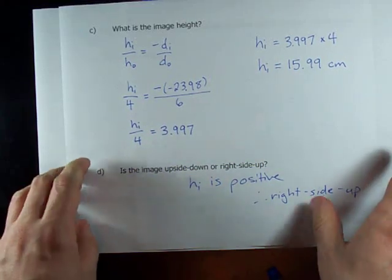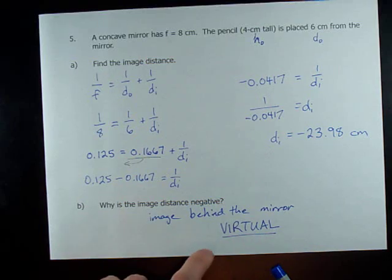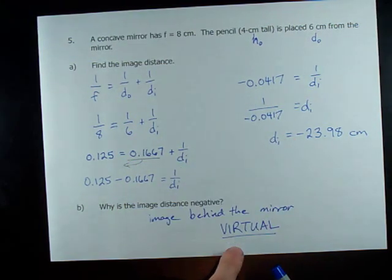Let's refresh you on the signs. A positive image distance means real image. A negative image distance means virtual.